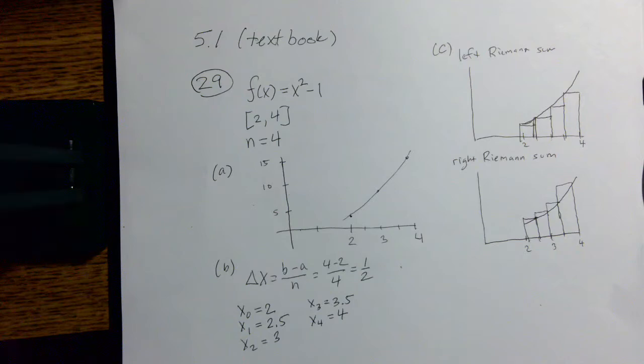Part A of this problem simply asks us to sketch this function over this interval. So I've drawn this rough sketch here. We're focused on the interval from 2 to 4 for this function which has a graph in the shape of a parabola. So we're seeing part of that parabola there.